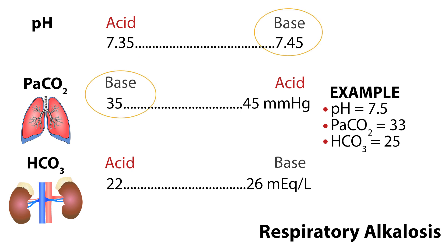In our next example, the pH is 7.5 — it is basic, so circle base. The PaCO2 is 33, which is also basic. The HCO3 is 25, which is within normal range. In this case, there is excess CO2 being excreted, possibly caused by hyperventilation or fever. The acid-base imbalance is again caused by the respiratory system, but with an alkalotic pH, meaning it would be respiratory alkalosis.